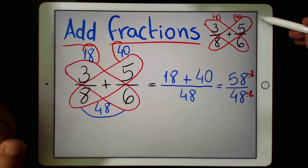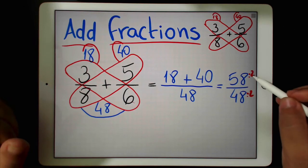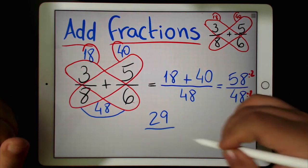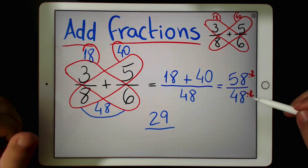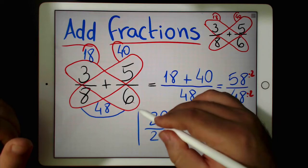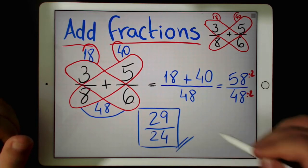The final answer is going to be 29, which is half of 58. So 29 over 48 divided by 2 is 24. 29 over 24 is the final answer.